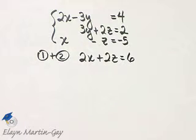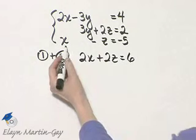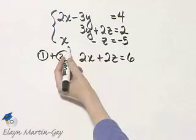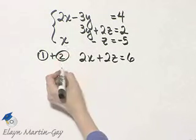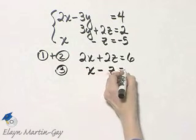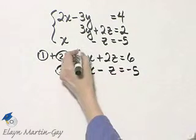Then normally what we do is we find any other two equations and we eliminate the same variable. But looking at these three equations, I see that this third equation happens to have no y term in it. So I'll simply write down now equation three, which is x minus z is equal to negative five.